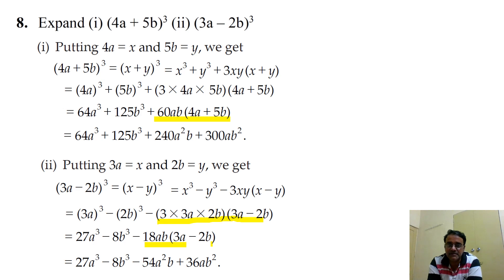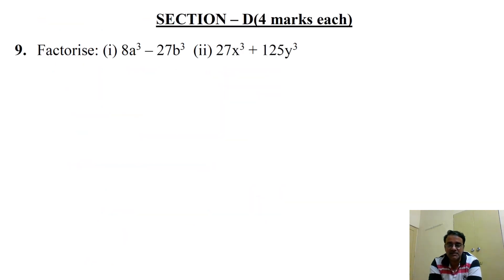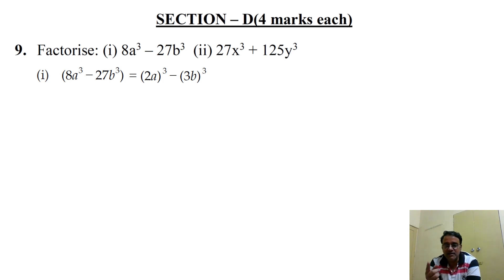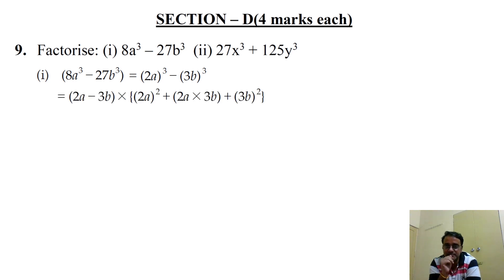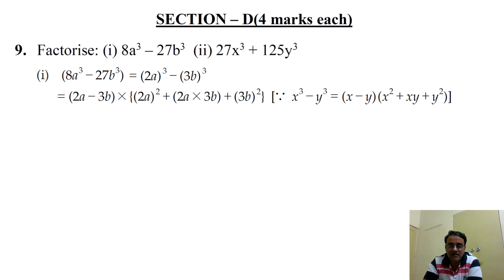Section D, Question 9, first part: factorize 8a³ - 27b³. We recognise 8a³ = (2a)³ and 27b³ = (3b)³. Using the formula x³ - y³ = (x - y)(x² + xy + y²), we get (2a - 3b)(4a² + 6ab + 9b²).